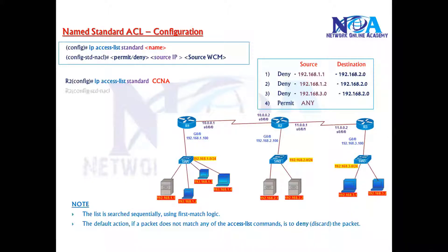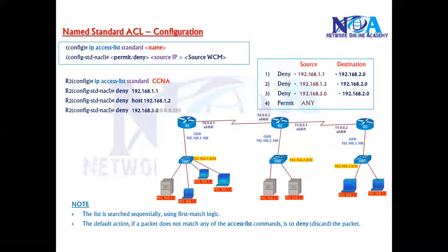Inside this mode: deny 1.1.1.1, the second rule is deny 1.1.1.2 host, the third line is deny the 192.168.3.0 subnet, and of course permit any.